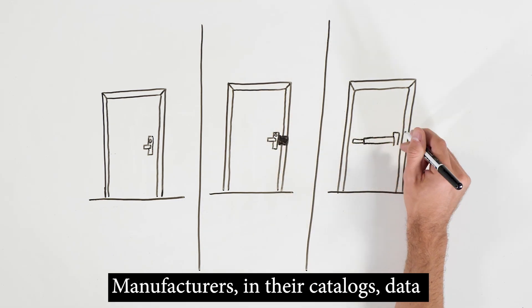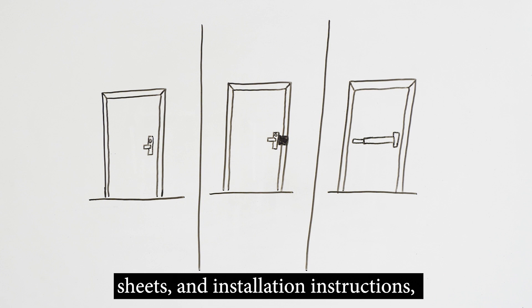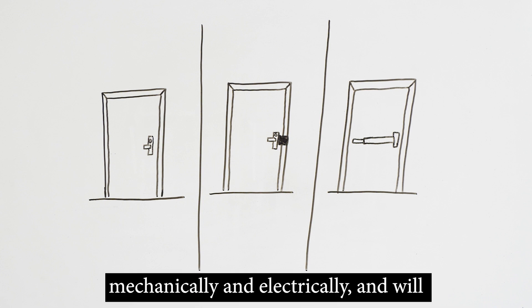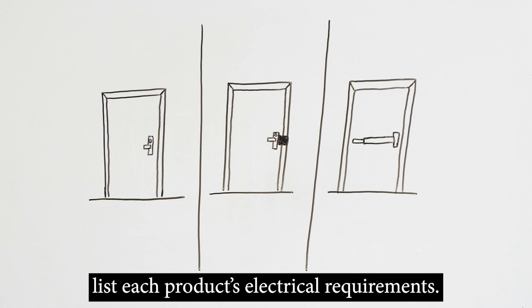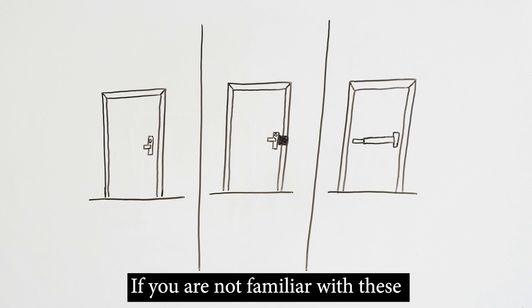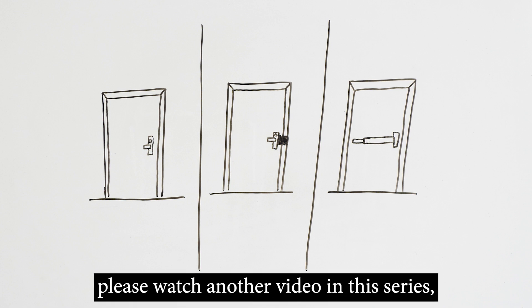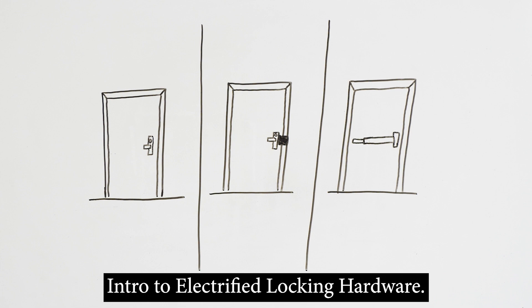Manufacturers in their catalogs, data sheets, and installation instructions describe how these products operate mechanically and electrically, and will list each product's electrical requirements. More on that in a minute. If you are not familiar with these products, after you finish this video, please watch another video in this series, Intro to Electrified Locking Hardware.